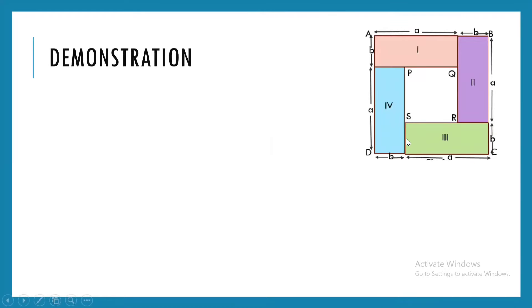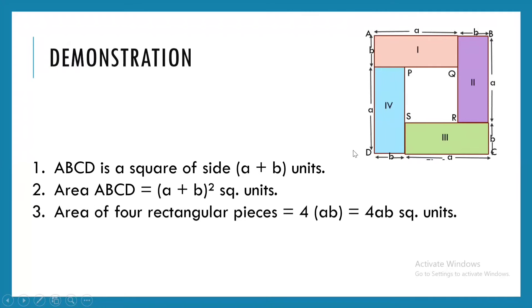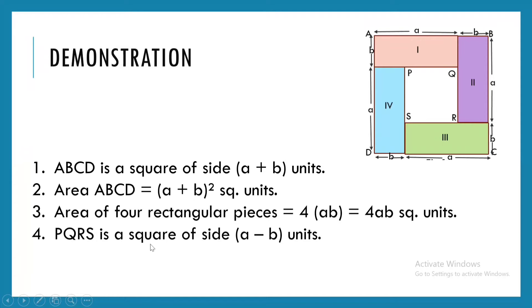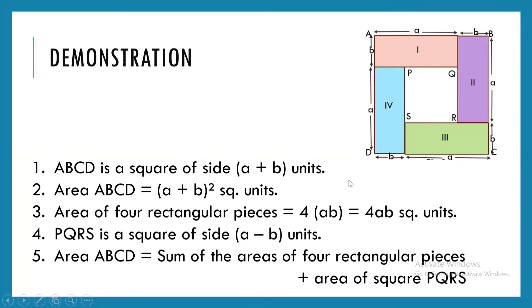I have copied the figure again for easy reference. ABCD is the square of side A plus B units, so its area equals A plus B whole square. The area of each rectangular piece is A into B, and since there are four such pieces, the total area of the four rectangles is 4AB. PQRS is the inner square of side A minus B. The area of ABCD equals the sum of the areas of all four rectangular sheets plus the area of the inner square PQRS.